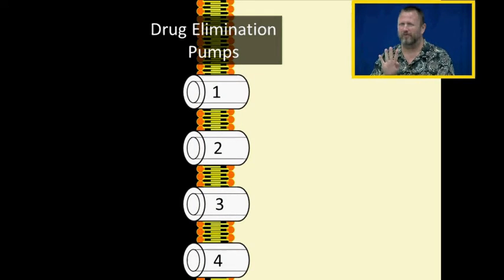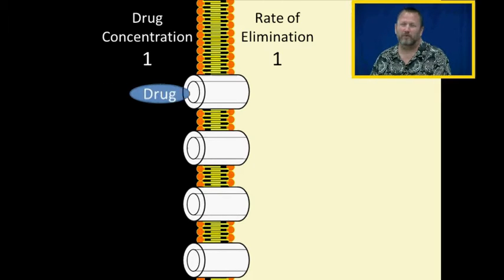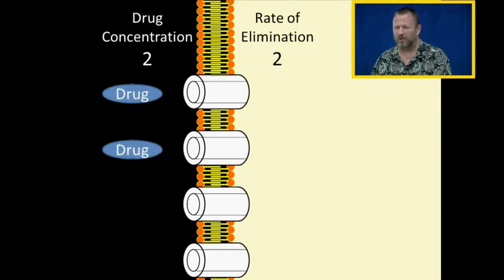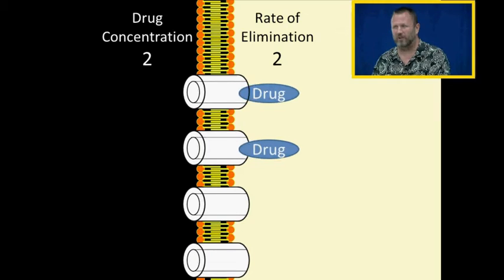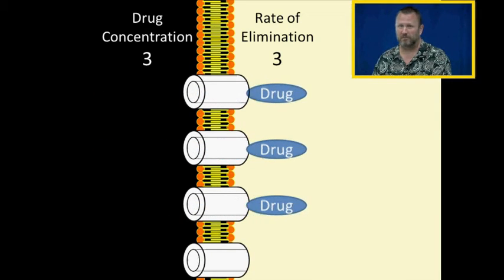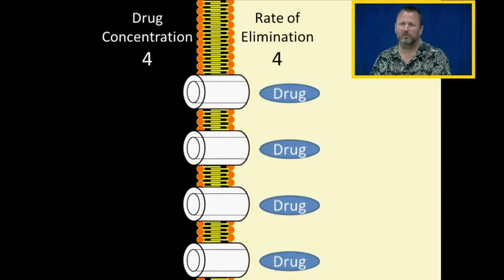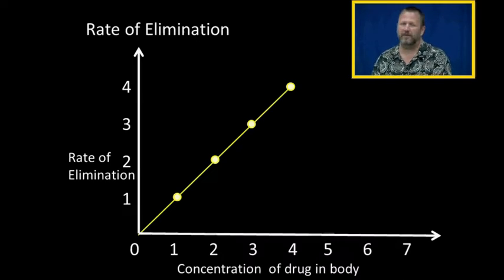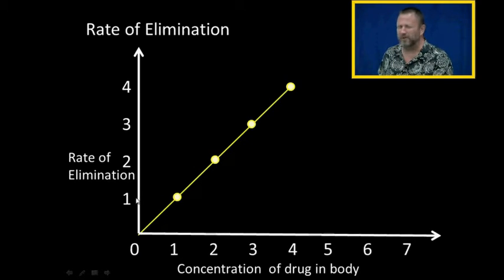Notice in my cartoon there are only four elimination pumps. If my drug concentration is one, then my rate of elimination is one. If my drug concentration is two, my rate of elimination is two. If my drug concentration is three, my rate of elimination is three. If my drug concentration is four, my rate of elimination is four. If I plot that out on a graph, it looks like this: concentration of one gives a rate of one, concentration of four gives a rate of four.